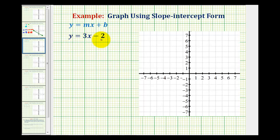We want to graph y equals 3x minus 2 using slope-intercept form of a line, which is the form y equals mx plus b, where b is the y-intercept of the line and m is the slope of the line.